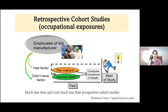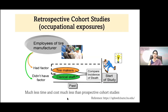A classical retrospective cohort study was done with employees of a tire manufacturer. All those employees were divided on the basis of exposure. Don't confuse this with retrospective in case-control — here you still start with exposure. The tire makers were the exposed group and the clerical staff were the unexposed, and then they compared the incidence of death. This type of study requires much less time and cost than a prospective cohort study.